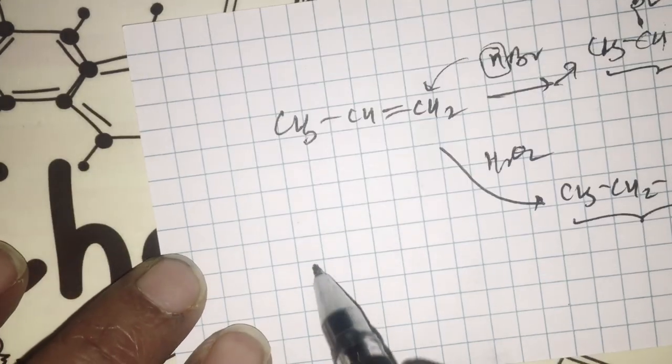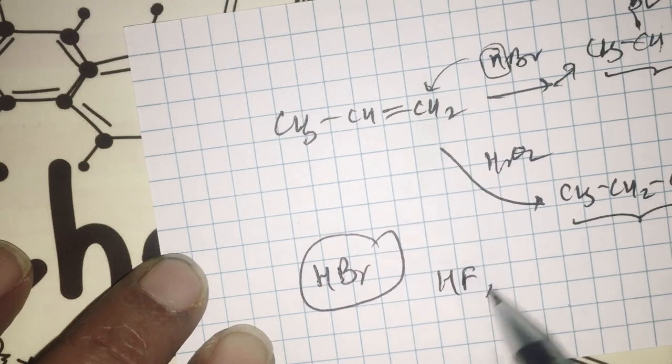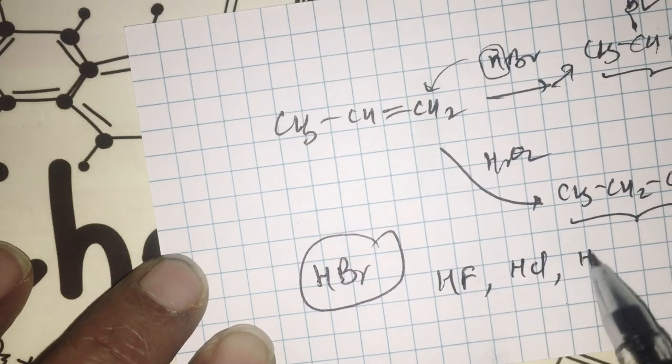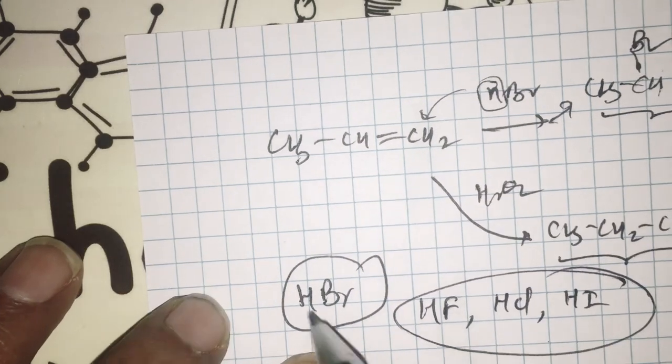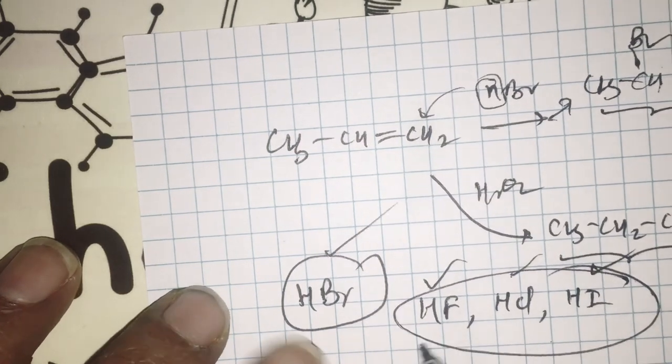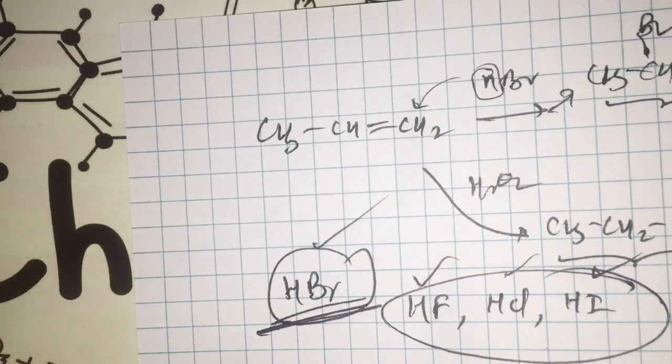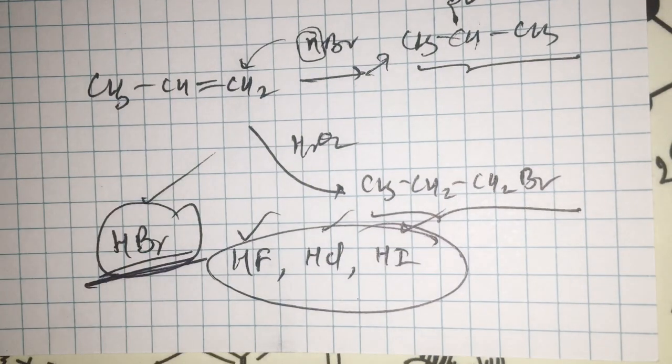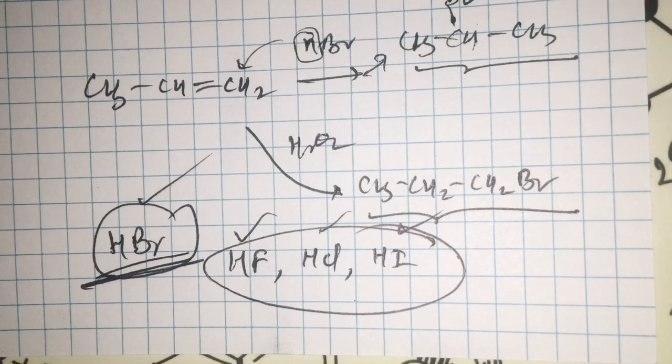Now, this anti-Markovnikov rule is applicable only for HBr, it is not applicable for HF, HCl, or HI. Why is this so? We will be examining in the next video. At the moment, you have understood Markovnikov rule and anti-Markovnikov rule and the requirement. Thank you.